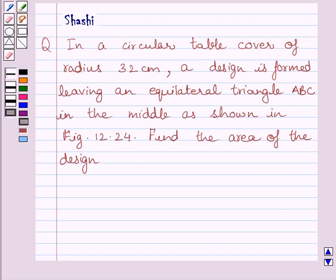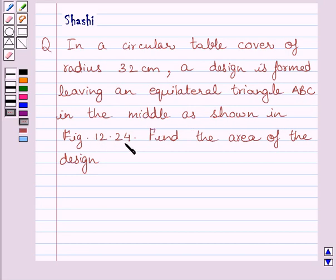Hi and welcome to the session. Let us discuss the following question. In a circular table cover of radius 32 cm, a design is formed leaving an equilateral triangle ABC in the middle as shown in figure 12.24. Find the area of the design.